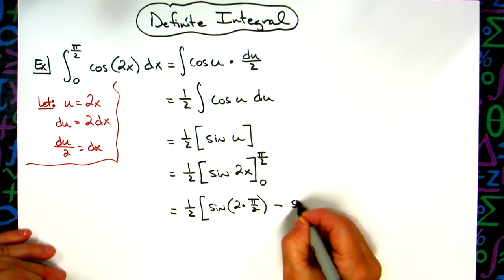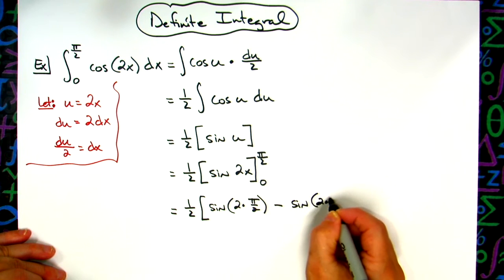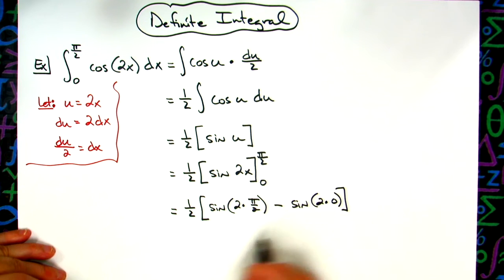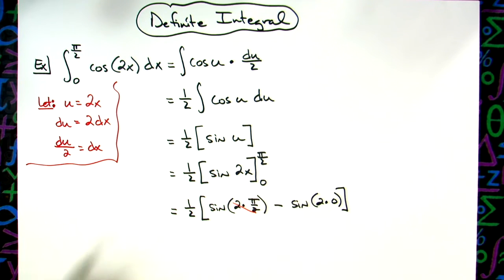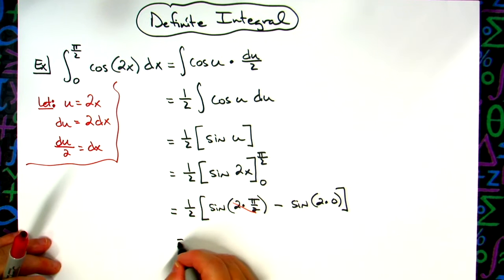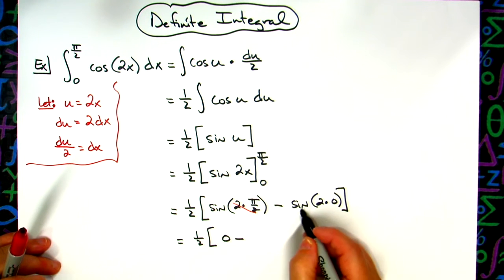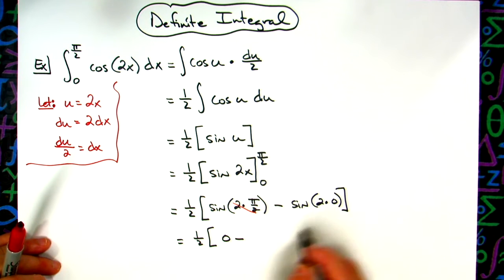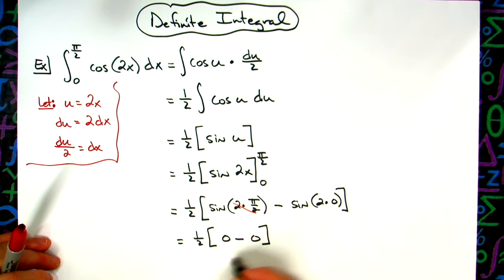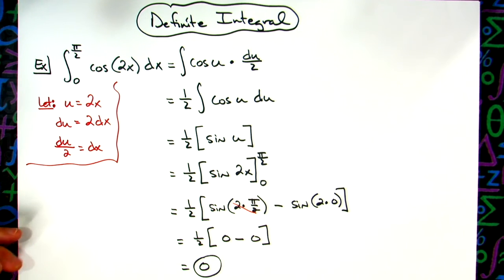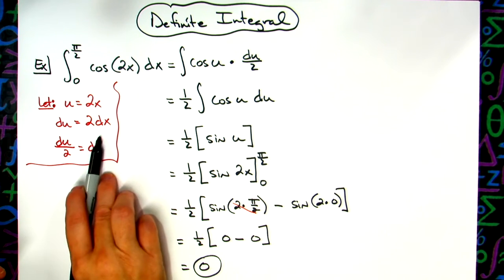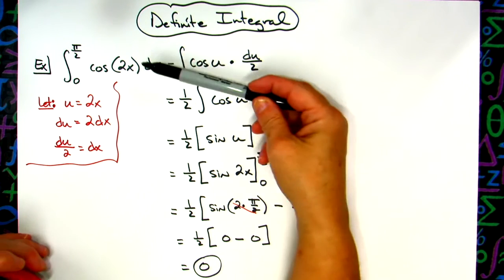Crossing out those twos right there, sine of pi is going to be zero, so I'm going to have one-half times zero minus sine of zero, which is going to be zero. So zero times one-half is going to give me an overall answer of zero. Honestly, pretty straightforward for a standard u-substitution.